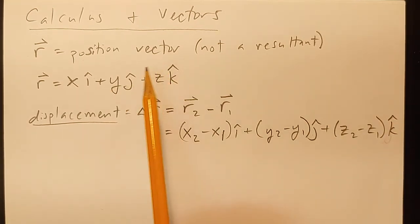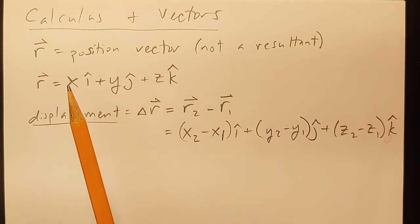So we have a position, and it's just like it always was, except instead of having just an x-coordinate or just a y-coordinate, now we have an x, y, and a z-coordinate. Displacement's change in position, so you've got to account for the x, the y, and the z direction.